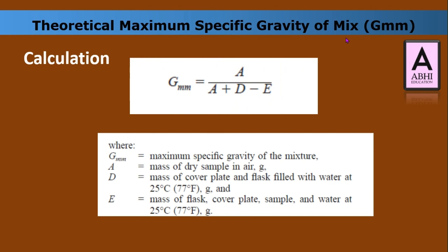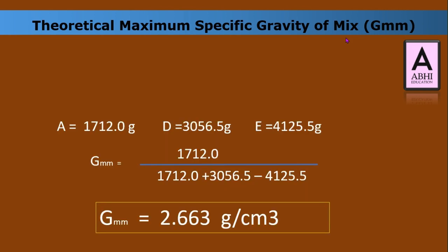For the calculation: Gmm equals A divided by (A plus D minus E), where Gmm is the maximum specific gravity of the mixture, A is the mass of the dry sample, D is the mass of the cover plate and flask filled with water, and E is the mass of the flask, cover plate, sample, and water — all at 25 degrees Celsius. E is taken after 15 minutes of agitation and vacuum. With A = 1712 g, D = 3056.5 g, E = 4125.5 g, Gmm calculates to 2.663.